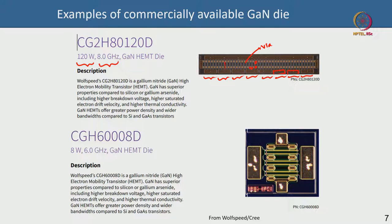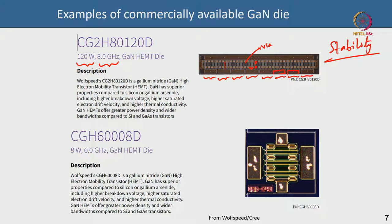If you zoom in it gets pixelated, so we cannot see exactly, but there would be via holes in either each source finger or at the edge of each power cell, connected to the ground plane below. Such large high-power devices also need stability circuits, because inherently there will be stability issues — the device will tend to oscillate. You introduce resistance on the gate side to reduce gain and improve stability — a gain-stability trade-off.